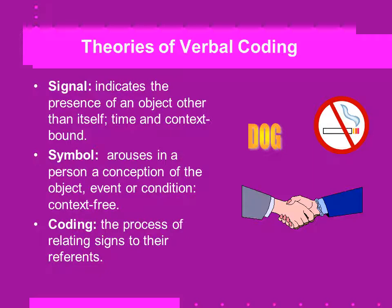Signals indicate the presence of an object other than itself, and it's time and context bound. A symbol arouses in a person a conception of the object, event, or condition, and it's context free. So when you see the word D-O-G, dog, that's a symbol. It's not the presence of the real object, but it does arouse a conception in your mind of dog. One person may visualize a dachshund, somebody else sees a German shepherd, and so on.